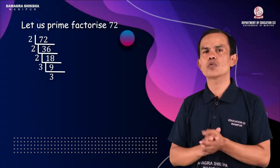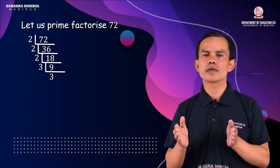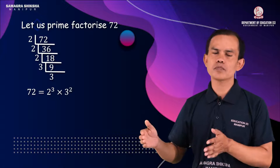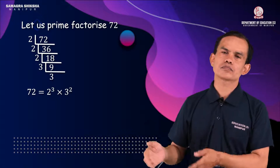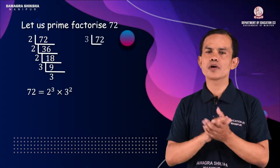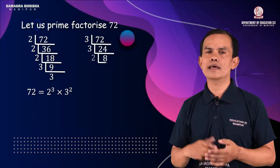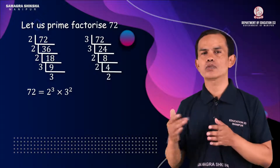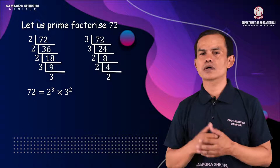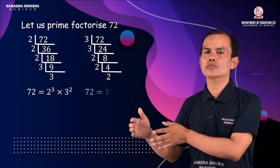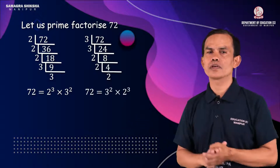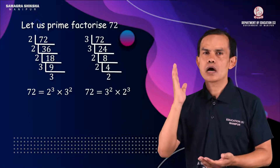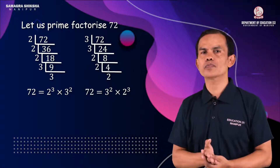So we collect the prime factors: we have three 2s and two 3s. Therefore 72 = 2³ × 3². This is the prime factorization of 72 written in canonical form.